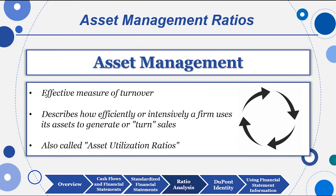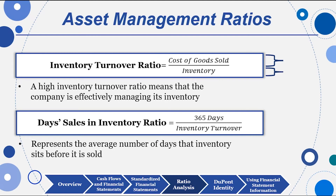Now for asset management ratios — these are measures of turnover, or asset utilization ratios. Inventory turnover is one of the most important: how fast do I turn my inventory into sales? It is cost of goods sold over inventory — COGS from the income statement, inventory from the balance sheet. Days sales in inventory is 365 divided by the inventory turnover ratio — the average number of days inventory sits on the shelf before being sold. For an Apple iPhone, it's a very low number, which managers love.